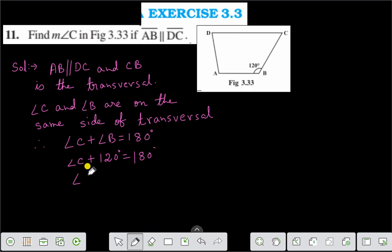Or angle C is equal to 180 degrees minus 120 degrees. Therefore, you can say that angle C is equal to 60 degrees. The value of angle C is 60 degrees.